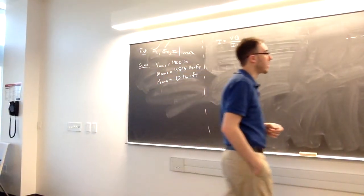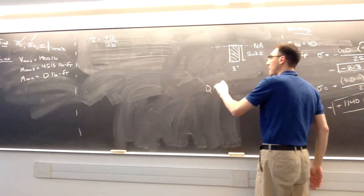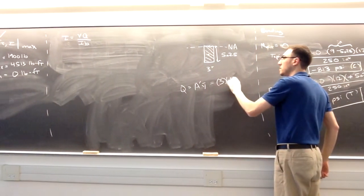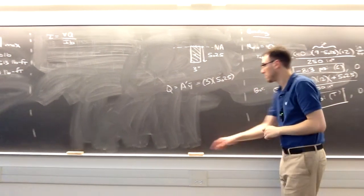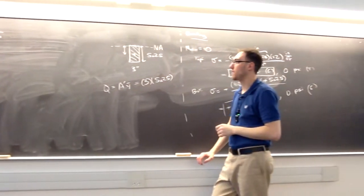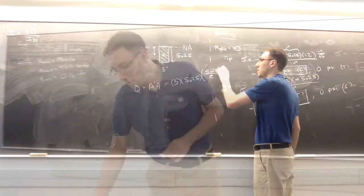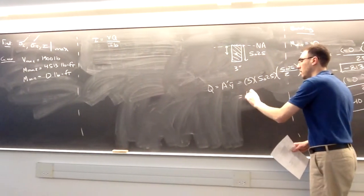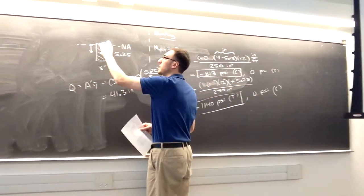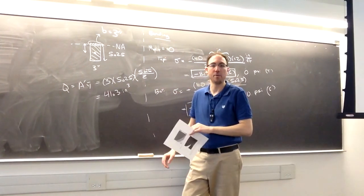My Q value is A-prime times Y-bar. A-prime is 3 times 5.25, and Y-bar is the distance between the centroid of the mini shape and the neutral axis, which for a rectangle is 5.25 over 2. So Q equals 41.3 inches to the third power. From the mini shape I can also see that the length of material cut through is 3 inches, giving my B value.